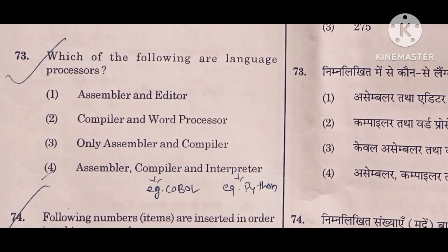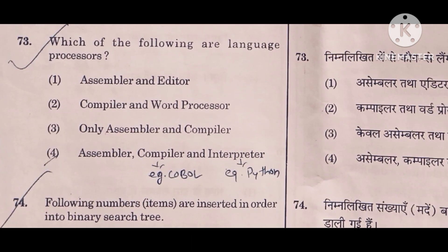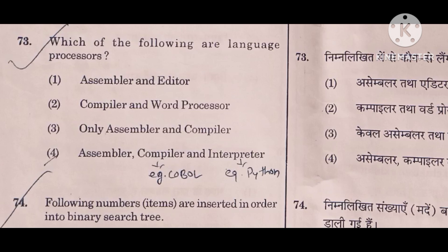The next question asks which of the following are language processors. Computers understand only machine language, so we use three types of translators to convert high-level or low-level language into machine code or object code: assembler, compiler, and interpreter. An assembler converts low-level assembly language into machine code. A compiler and interpreter both convert high-level language into machine code. The key difference is that a compiler executes the whole program at once, whereas an interpreter reads and executes line by line, detecting errors line by line.